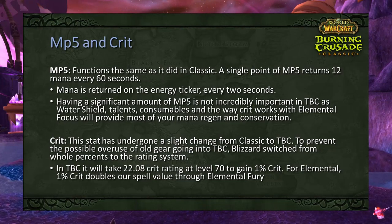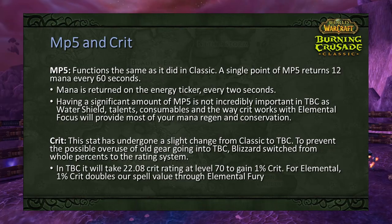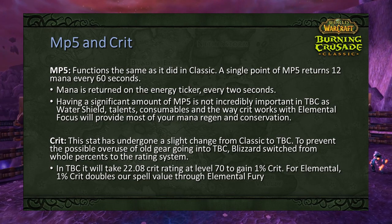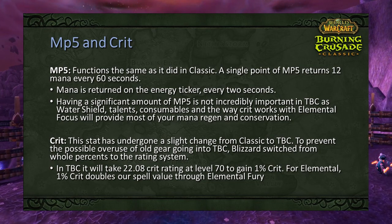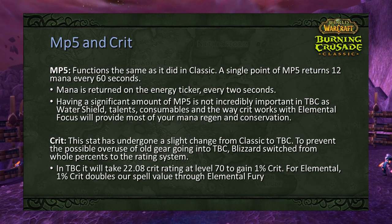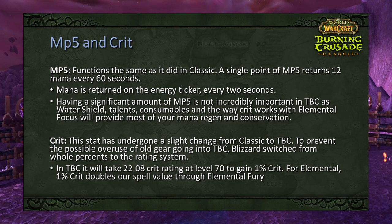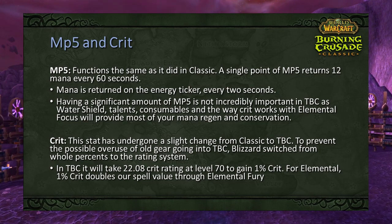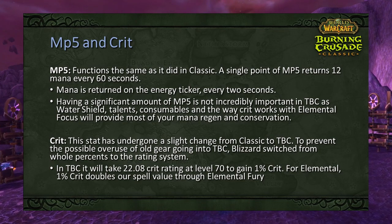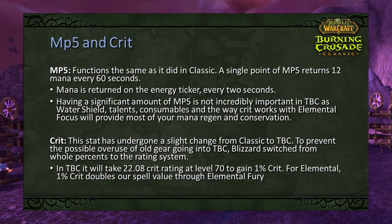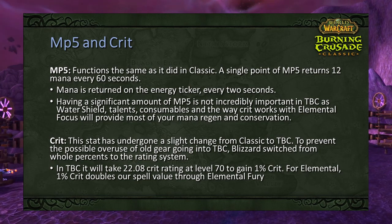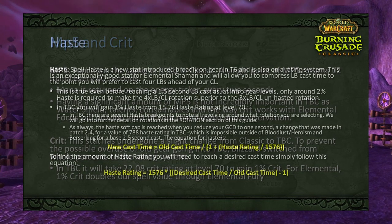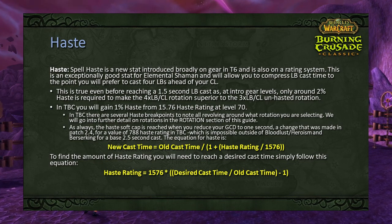Moving on to mp5 and crit: mp5 functions the same as Classic where one point returns 12 mana every 60 seconds on the 2-second energy ticker. Having significant mp5 isn't critically important in TBC, as Water Shield, talents, consumables, and how crit interacts with Elemental Focus will provide the majority of your mana regen. Crit has undergone a change — Blizzard switched to a rating system where 22.08 crit rating at level 70 equals 1% crit. For Elemental, 1% crit doubles spell value through Elemental Fury, making it one of our most valuable secondary stats.